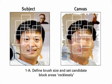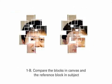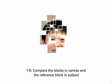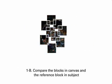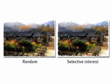A. Define brush size and set candidate block areas recklessly. B. Compare the blocks in canvas and the reference block in subject. C. Set the worst block as the uncomfortable area. As the picture shows, each picture has totally different results depending on the error generation strategy.